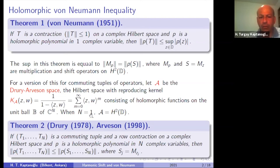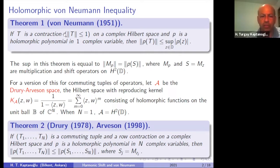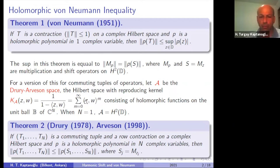The Drury-Arveson space is a reproducing kernel Hilbert space with a specific kernel having a Taylor series expansion. When n equals one, it reduces to the Hardy space of the unit disk, and this theorem reduces to the classical von Neumann inequality when n equals one.